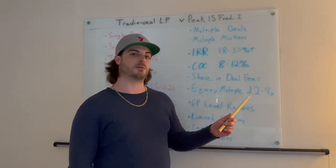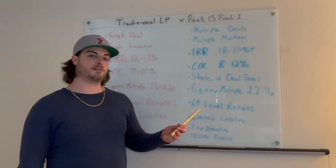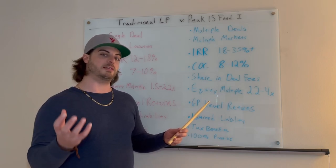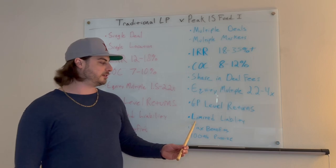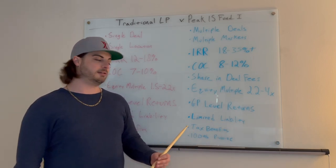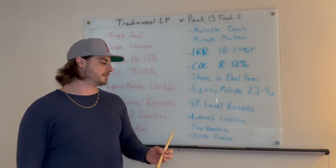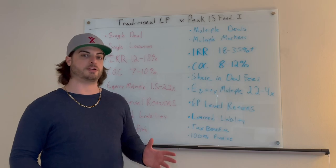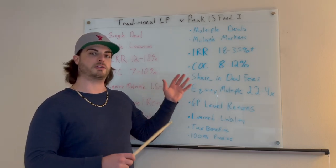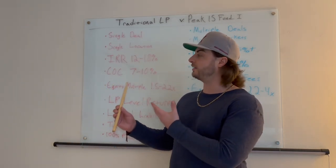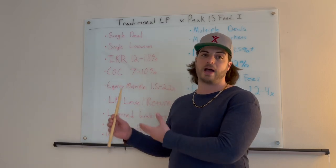The equity multiples we project with our fund are anywhere from 2.2 to 4x on your money — 2.2x being our projected low end within our fund. The fund gets GP-level returns; we are general partners in the deal. You still, as a passive investor in our fund, have limited liability, the same tremendous tax benefits you get from one deal but on multiple deals, and it's still 100% passive. The major difference is the fund invests as a general partner, so you get general partner economics, which you would never get as a limited partner investing in one deal.